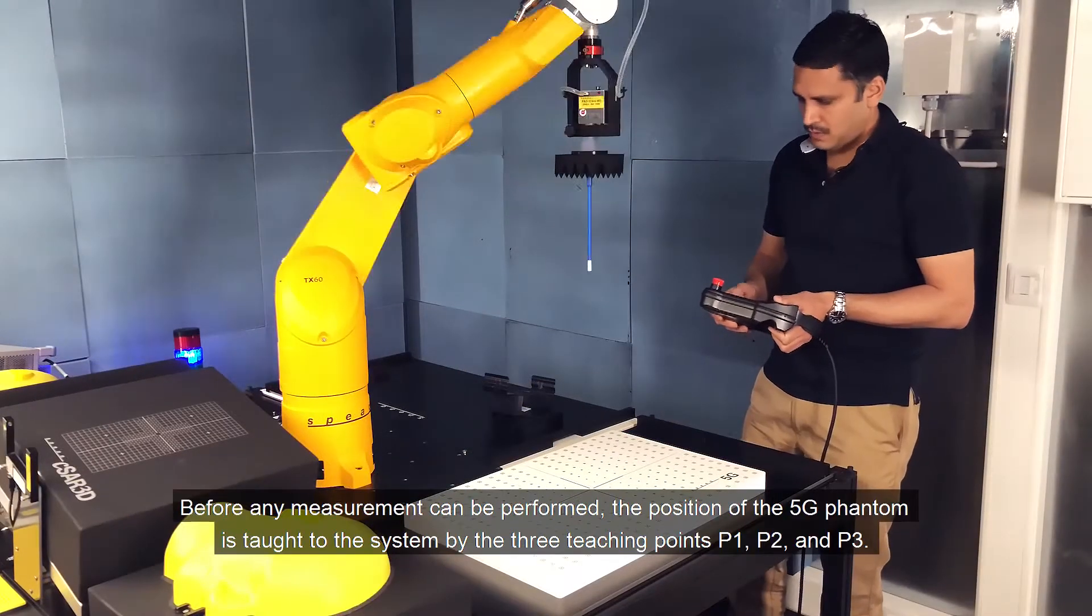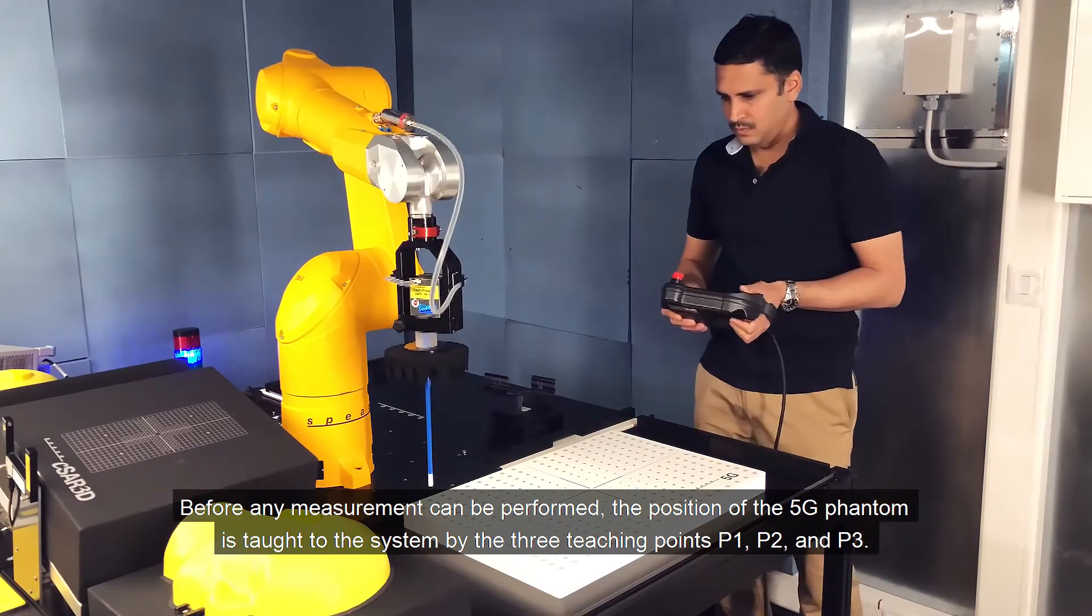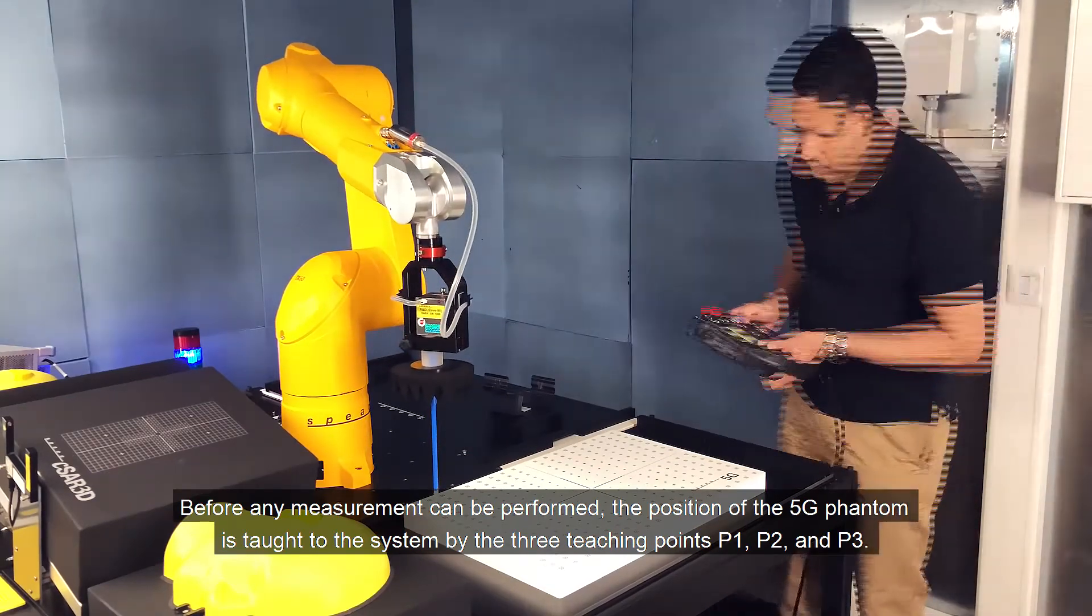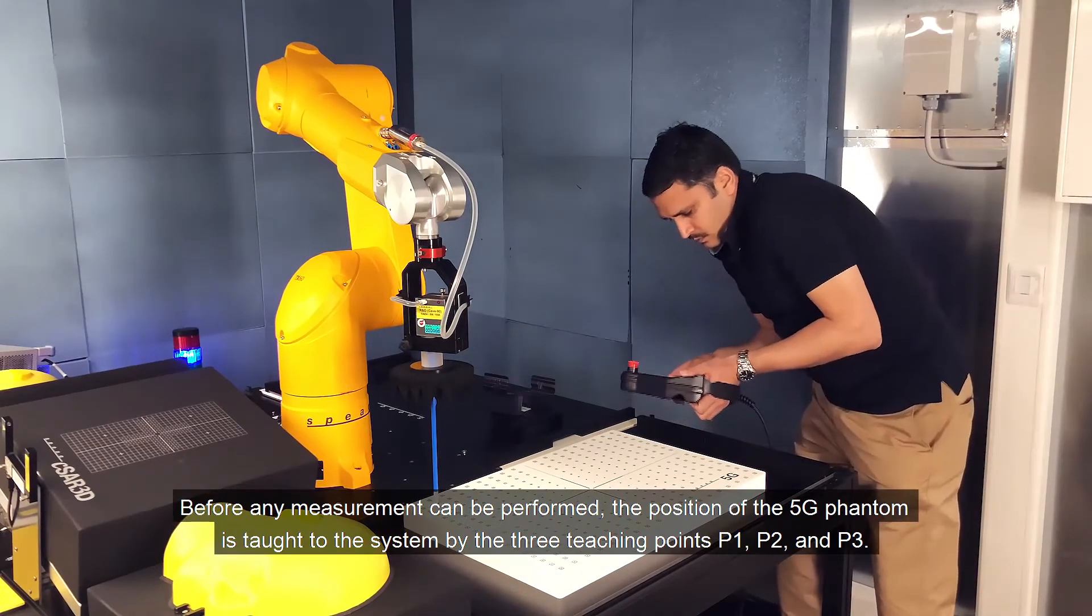Before any measurements can be performed, the position of the 5G phantom is taught to the system by the three teaching points P1, P2 and P3.